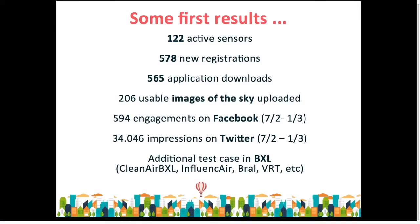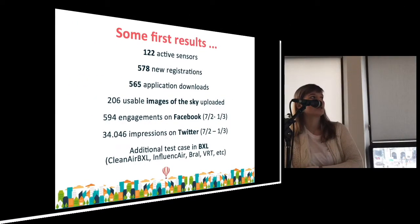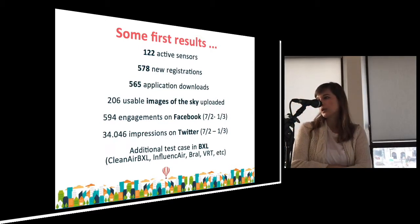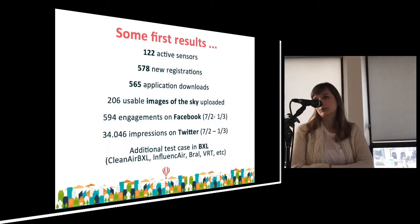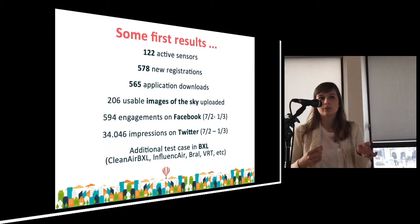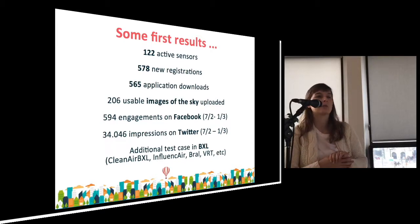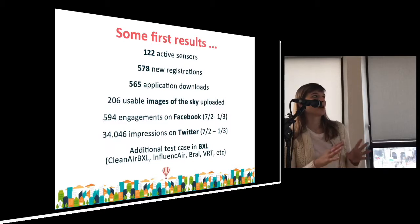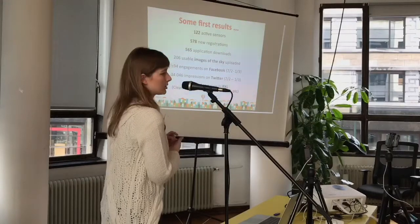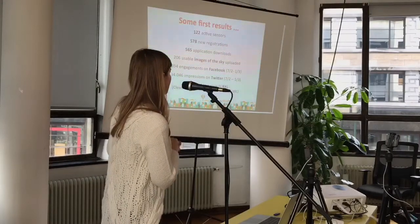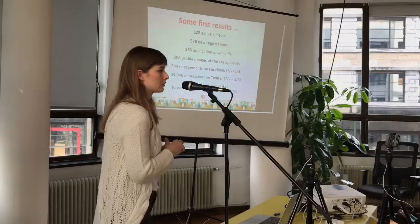Some first results since the first week of February: we already have 122 active sensors, mostly in Germany, where the community is quite interested in installing sensors and can get pre-assembled ones from their organization or join a workshop to assemble themselves. We see around 480 new user accounts and 465 downloads of the application. Right now we have 206 images of the sky being uploaded, and an increase in engagement and impressions through social media.